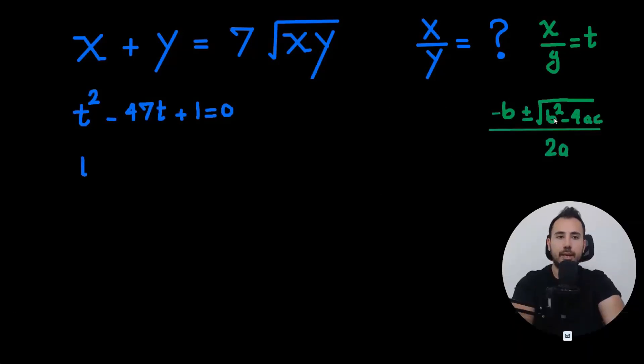So we have this quadratic formula, in case you've forgotten it. The first term is a, negative 47 is b, and 1 is c. Let's apply the formula.